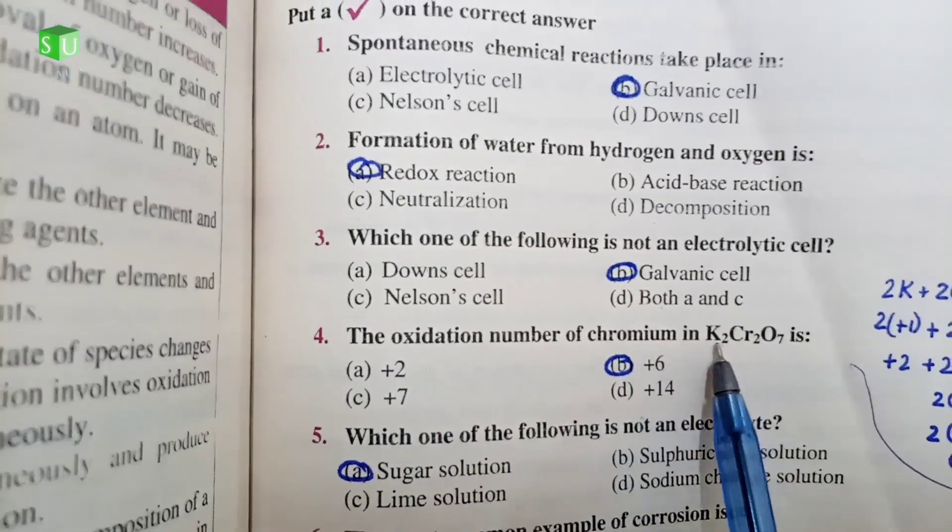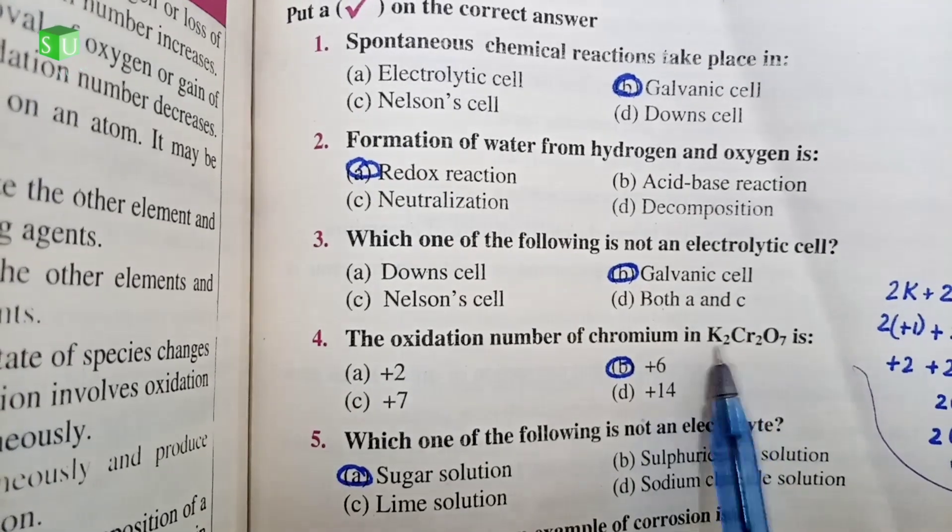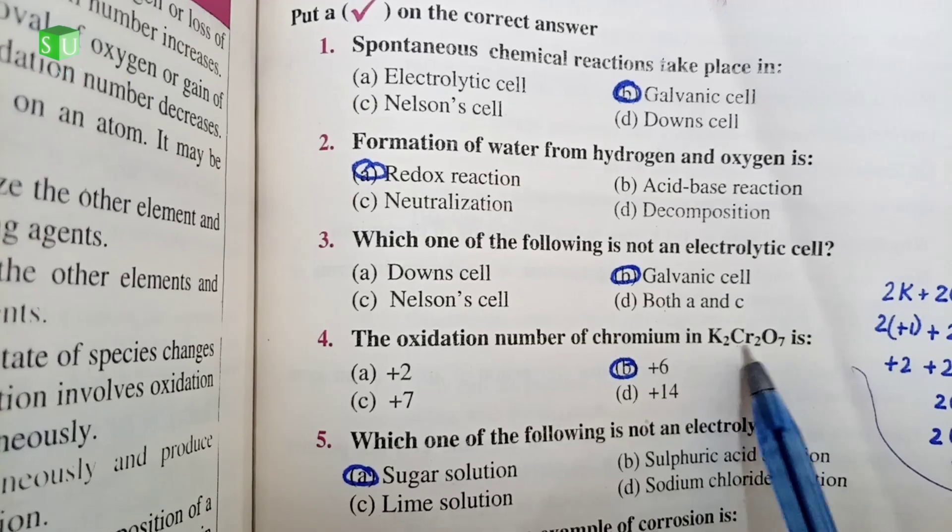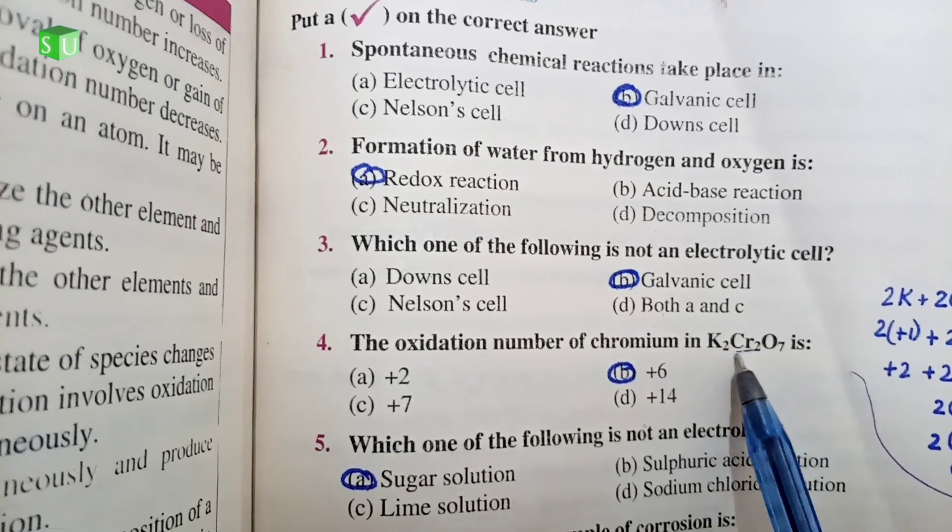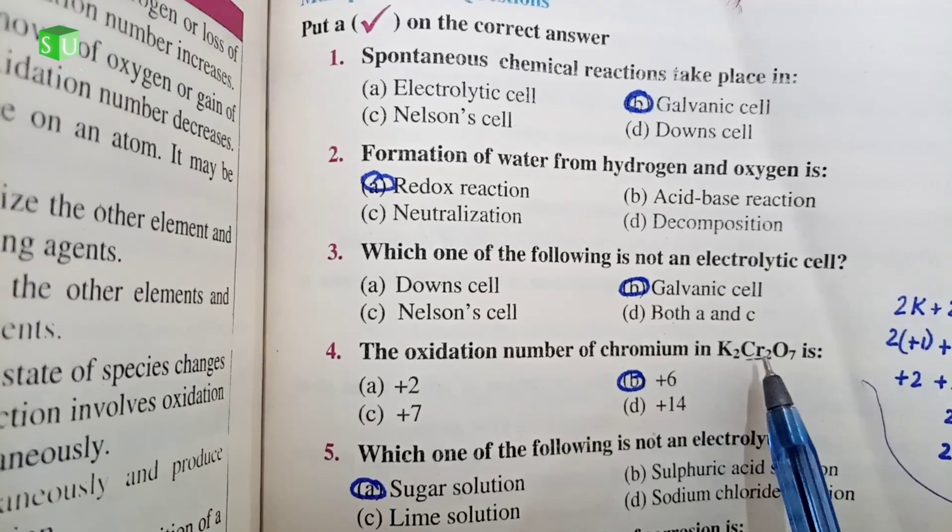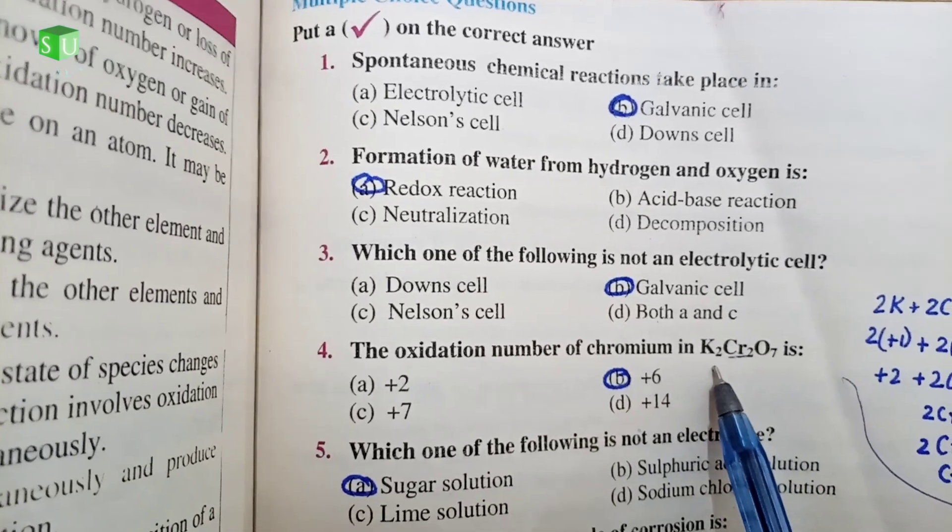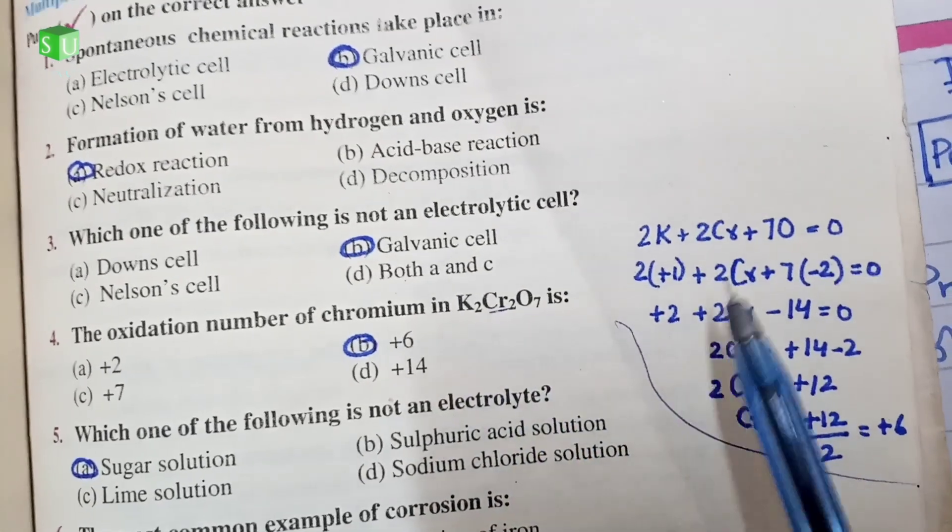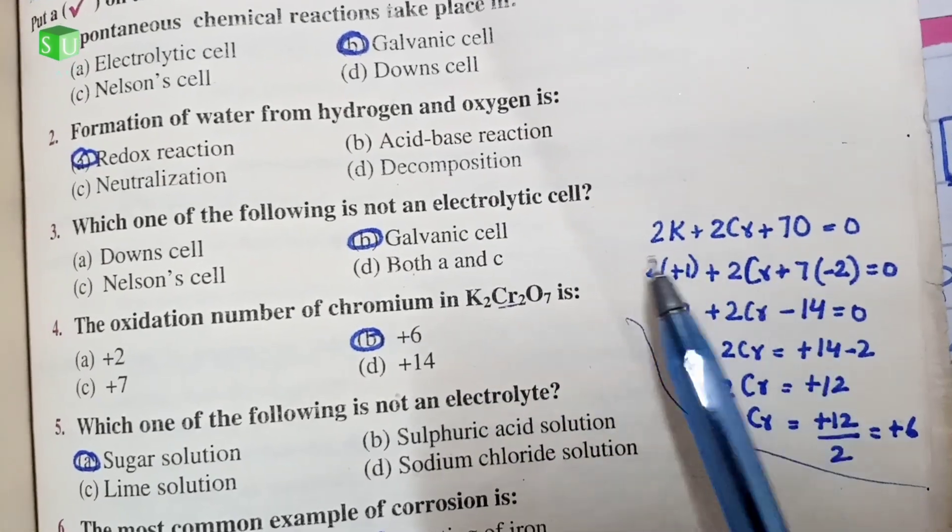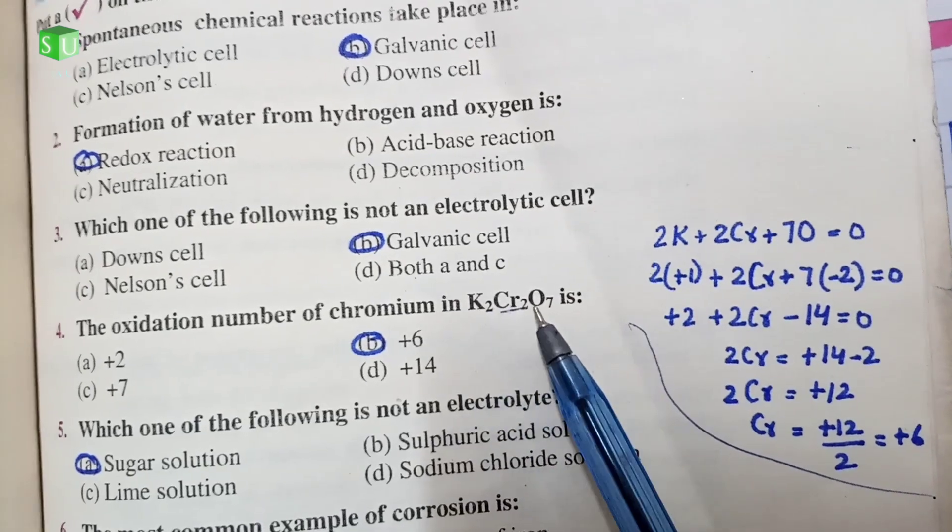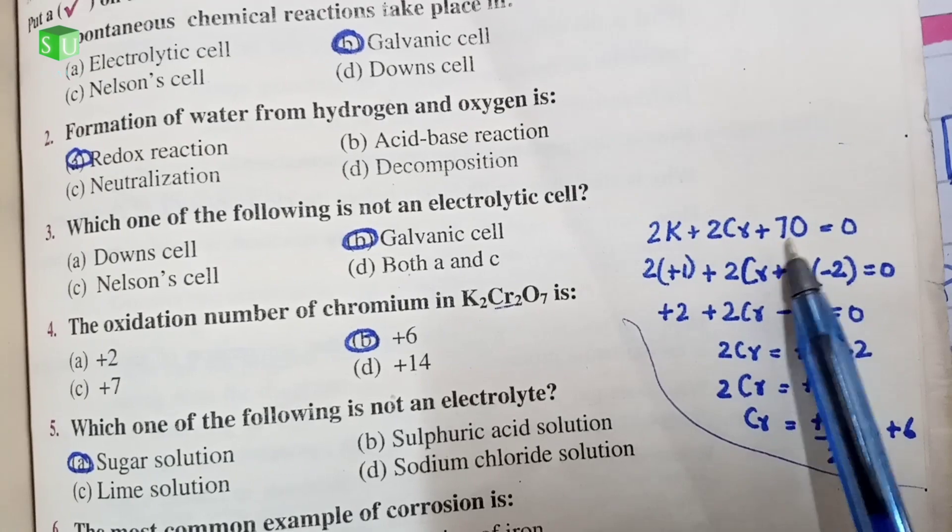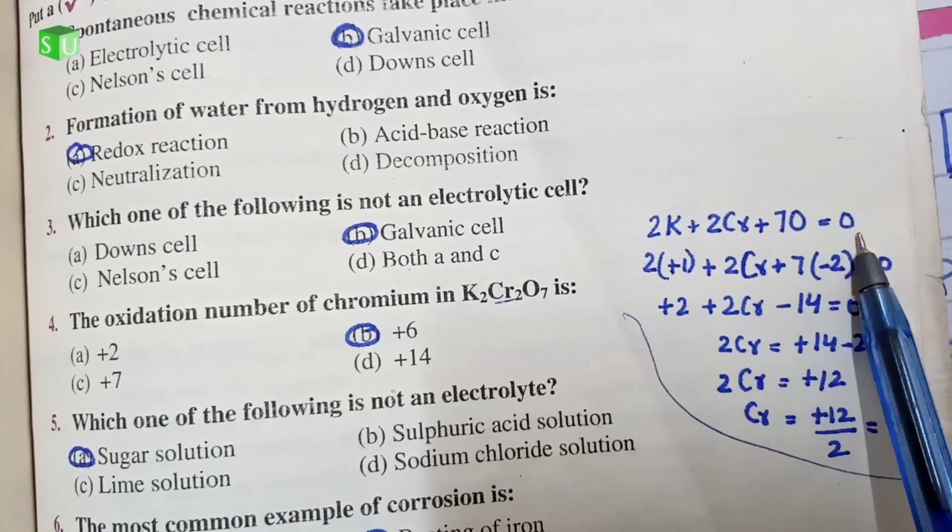Number 4 is the oxidation number of chromium in potassium chromate K2Cr2O7. This is a long question. I explained how the oxidation state is calculated. I will explain it again. First of all, you have to write the formula in sequence. How many elements are used? 2 potassium, 2 chromium, plus 7 oxygen. You have to equal 0.